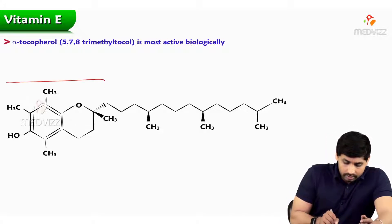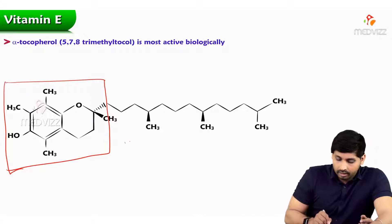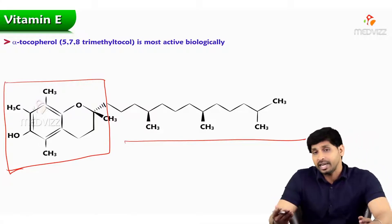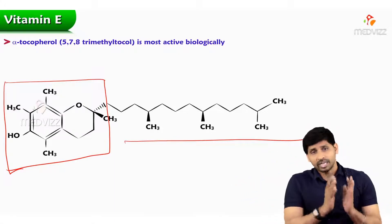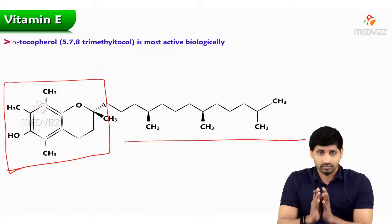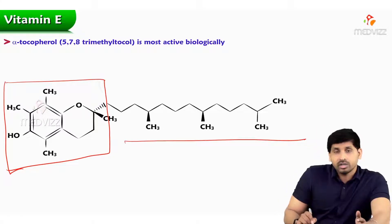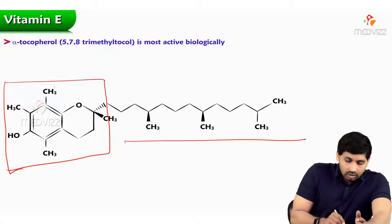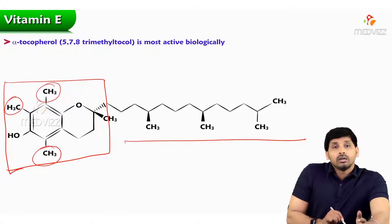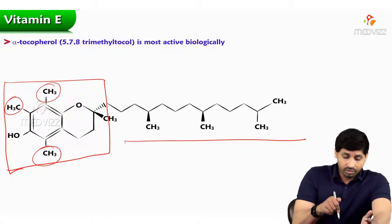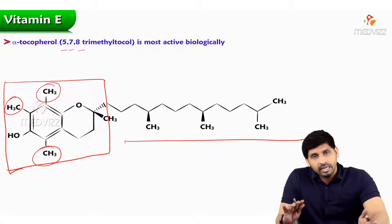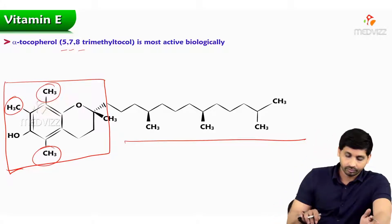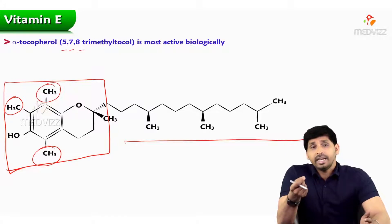Looking at the structure: this is the chromanol ring and this is the isoprenoid side chain — similar to Vitamin A, which has a beta-ionone ring and isoprenoid side chain, here the beta-ionone ring is replaced by the chromanol ring. Based on the methyl group positions, what you see here is alpha tocopherol, with methyl groups at the fifth, seventh, and eighth carbons. In gamma and beta and delta tocopherols, the positions change. The most active form of Vitamin E is alpha tocopherol.